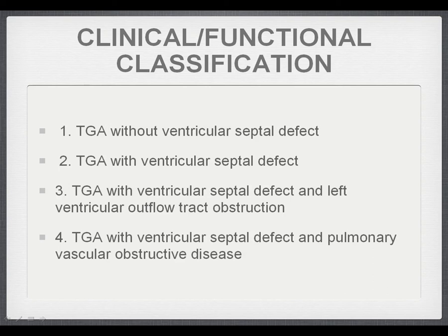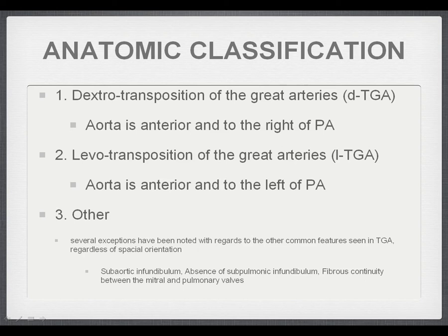There are different classification systems. There's a clinical or functional classification used more generally when looking at TGA with echo. However, I'm going to discuss an anatomic classification system which, while there are multiple subtypes, looks at transposition in two forms: levo (LTGA) and dextro (DTGA). DTGA is the most common, accounting for about 60% of all transposition, while LTGA — congenitally corrected transposition — is less common. It can be seen in uncorrected adults, as it involves both atrioventricular and ventriculo-great vessel discordance.